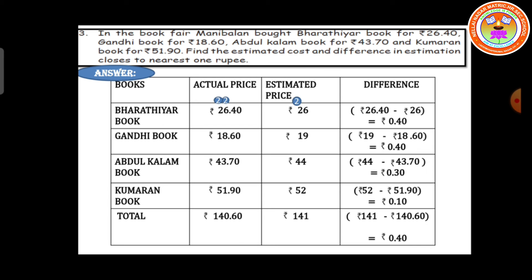Now we have found all the estimated prices. For the differences: Bharatiyar book — 26 rupees 40 paise minus 26 rupees gives 40 paise. Gandhi book — 19 rupees minus 18 rupees 60 paise gives 40 paise. Abdul Kalam book — 44 rupees minus 43 rupees 70 paise gives 30 paise. Kumaran book — 52 rupees minus 51 rupees 90 paise gives 10 paise. Total actual price minus estimated price: 141 rupees minus 140 rupees 60 paise gives 40 paise.